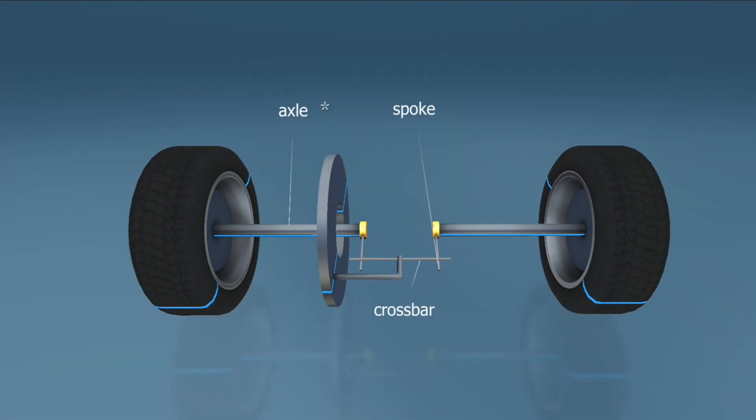Now let's see how the differential evolved. The two driven wheels are mounted on separate axles. There are spokes attached to the inner end of both axles, which are driven by a crossbar pressed against them. The wheels can only rotate simultaneously at the same speed.